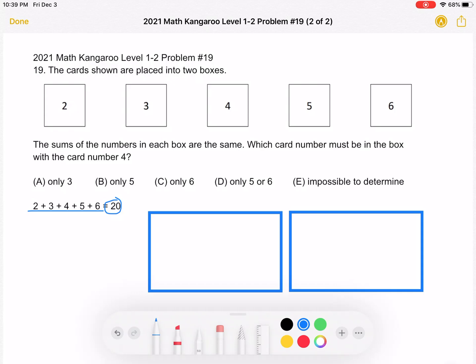And now we're going to be dividing this sum of 20 into two boxes so that the sum in each box is the same. That means we can do 20 divided by 2. We know that the sum of the numbers in each box must be equal to 10.